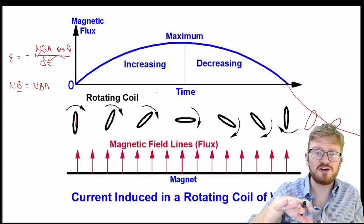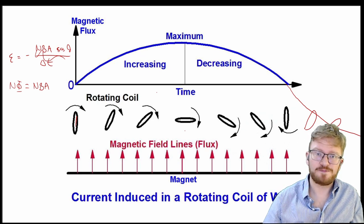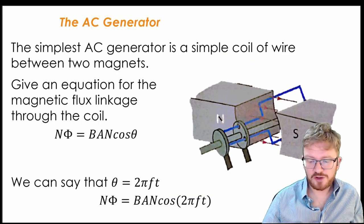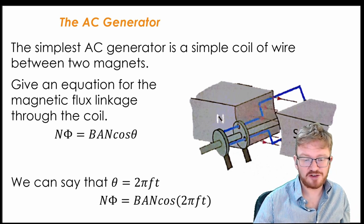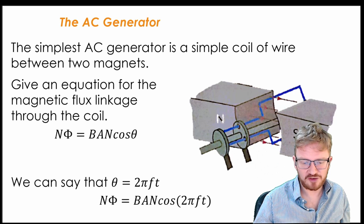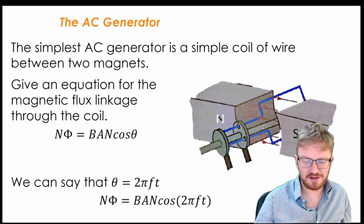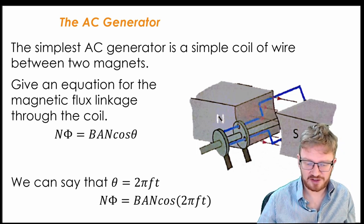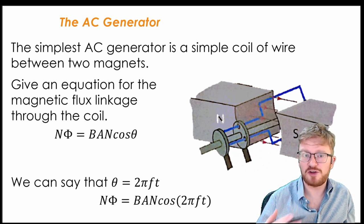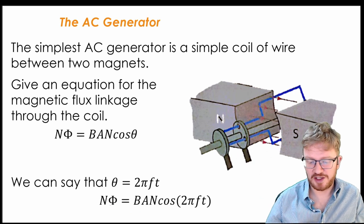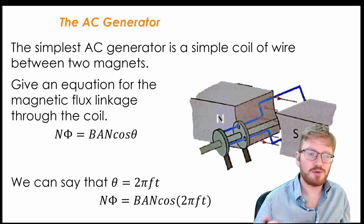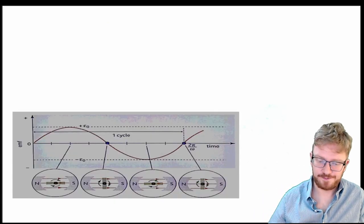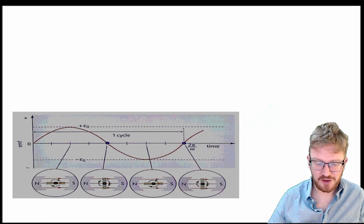So I'm going to get this sinusoidal curve. Why does it go negative? Well, if you imagine that I flipped it upside down, when I flip it upside down, that's going to swap it over. So this gives us a really nice simple AC generator. The simplest AC generator we get is just a coil of wire between two magnets. And what we can see with that is we can say that the flux linkage is BAN cos theta. That's what we kind of did last lesson. Now, if you think about your circular motion stuff, you could also then say that N phi is BAN cos 2 pi f t. But don't worry too much about that because this is more used on other examples. It doesn't come up so often for CIE.